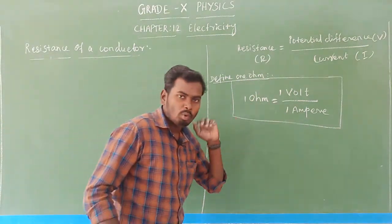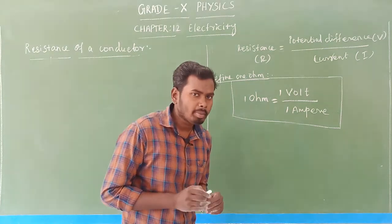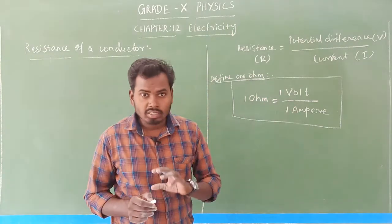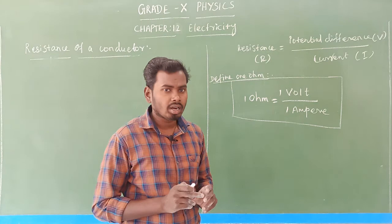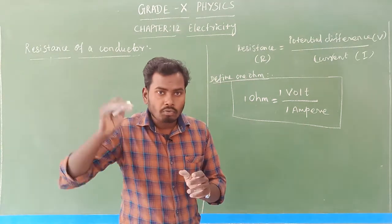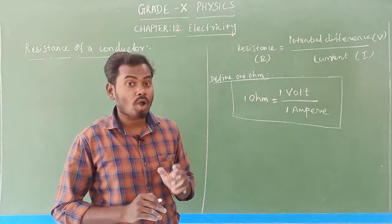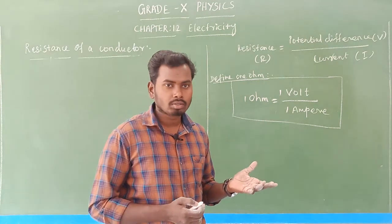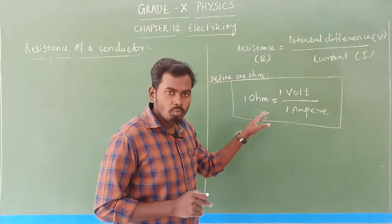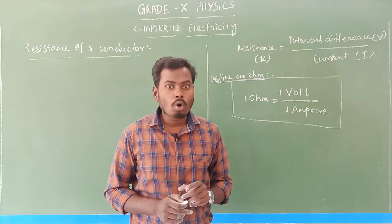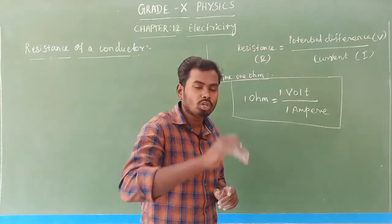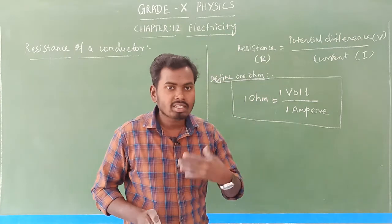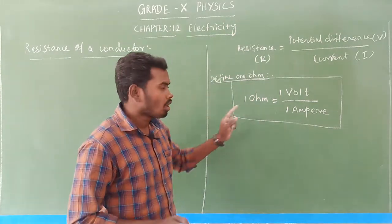What is 1 ohm? 1 ohm means: when 1 volt potential difference is applied across the two terminals of the conductor and 1 ampere current flows through it, then the resistance value is said to be 1 ohm.